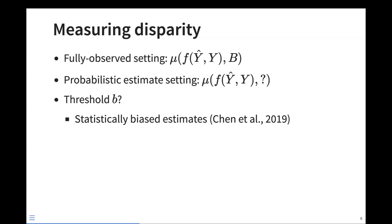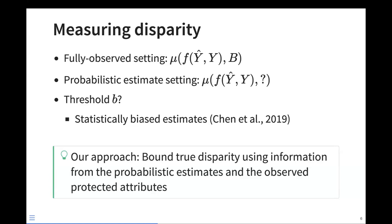In the fully observed setting where we observe the protected attribute B for our entire data set, it's pretty straightforward how we measure disparity. But in this setting where we might only observe protected features for a small percentage of our data and for the rest just have estimated protected attributes, it's not clear what we should do. One natural heuristic is to threshold those probabilistic estimates, treat them as the true protected attribute, and measure disparity that way. But it's been shown that this can lead to statistically biased estimates of disparity, so we need other approaches.